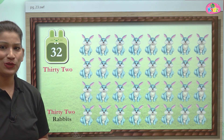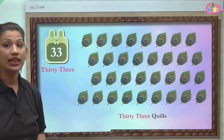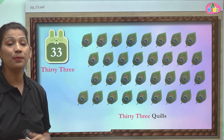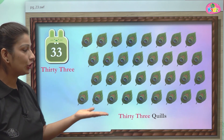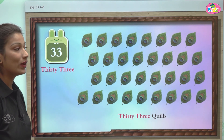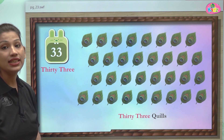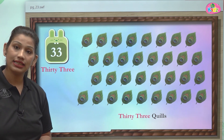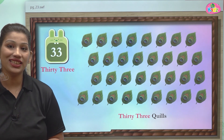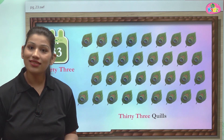What comes after 32? Yes, it is the number 33. Double three is also called 33 — when three appears two times, it makes double three: 33. And here you can see quills. These quills are 33 in number. T-H-I-R-T-Y is 30, T-H-R-double-E is three — together they make 33.